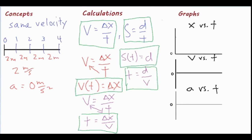We already know the acceleration is zero every single time, so the acceleration versus time graph is going to be sitting right on the x-axis 100% of the time. We are never going to leave that position for something moving at constant velocity, because we know the velocity isn't getting greater or smaller.